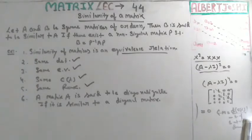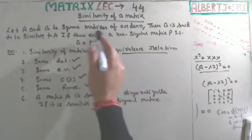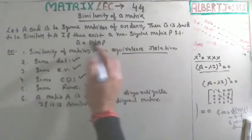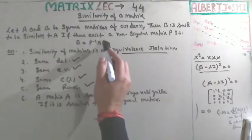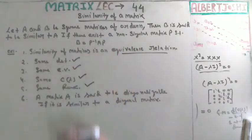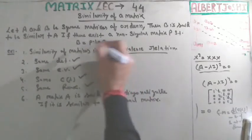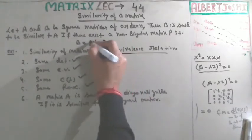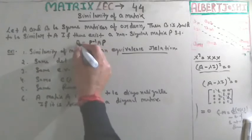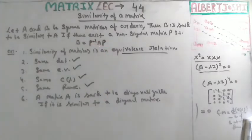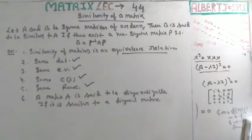If you have to prove that two matrices are similar or not, then you have to find a non-singular matrix P such that when you multiply you get the other matrix. This is also very simple to obtain.